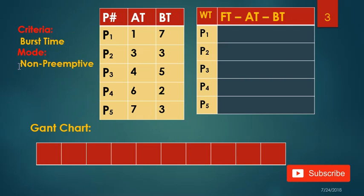The mode for shortest job first non-preemptive — here we have five processes: P1, P2, P3, P4, and P5. AT means arrival time and BT means burst time. Here we have a list of burst times, a list of arrival times, and a list of processes. I'm going to start by making a Gantt chart.